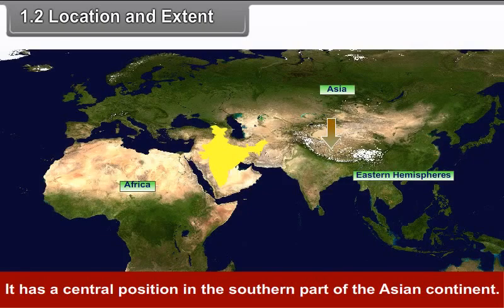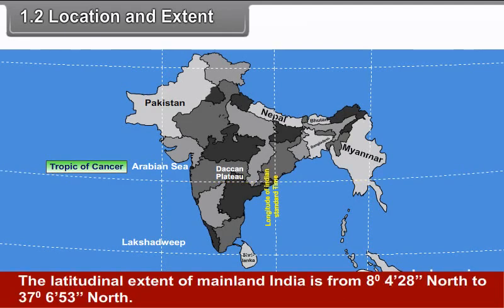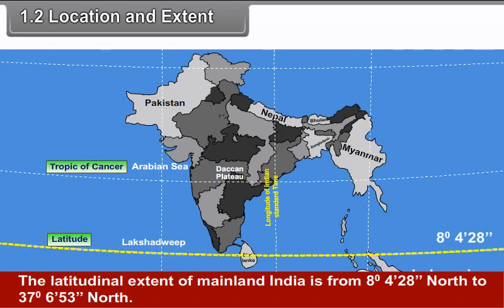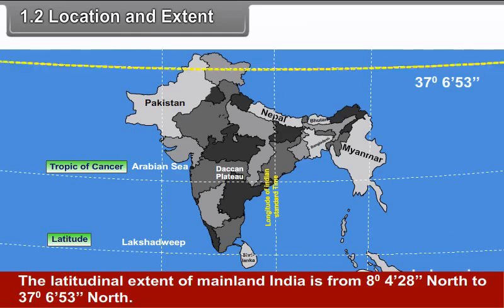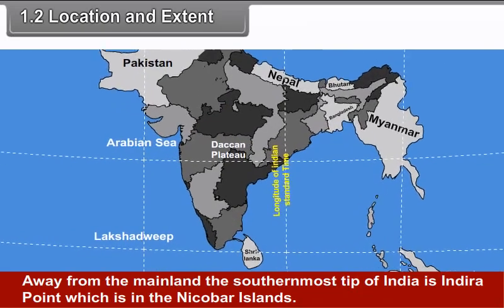India lies in the northern and eastern hemispheres. It has a central position in the southern part of the ancient continent. The Tropic of Cancer passes through the central part of India. The latitudinal extent of mainland India is from 8 degrees 4 minutes 28 seconds north to 37 degrees 6 minutes 53 seconds north.